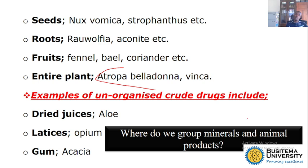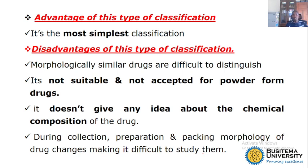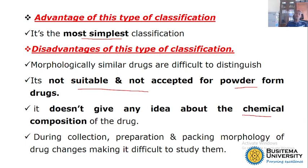There is also a question of where to classify products like milk or cow dung, because in some communities they use cow dung to treat some cases — so cow dung would be part of an unorganized drug. The disadvantage of morphological classification is that it is not suitable for drugs that are in powder form, and you cannot know the chemical composition of that particular drug — you only know whether it is organized or unorganized, but the chemical content is not known.